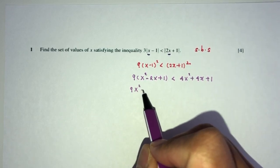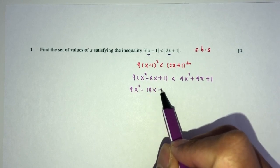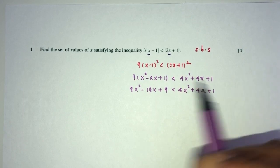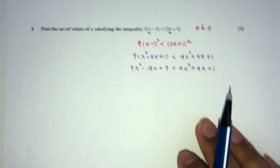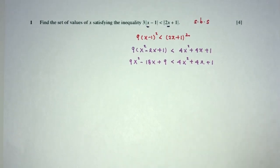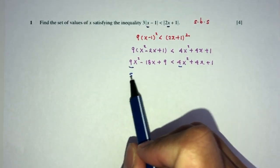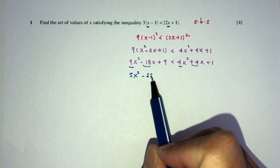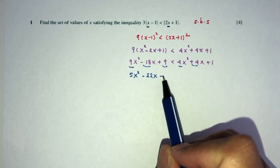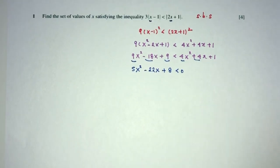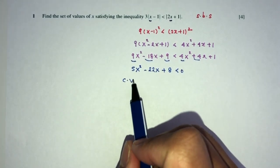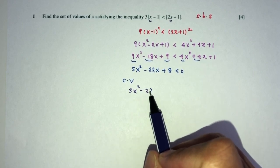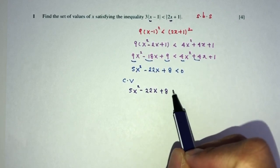Expand. You'll have 9x² - 18x + 9 less than 4x² + 4x. Now, send everything to the left-hand side because we want to simplify this equation. So you will have 9 minus 4, that should be 5. Minus 18 minus 4 should be minus 22. Plus 9 minus 1 should be plus 8 less than 0. So now we have to find the critical values of this equation, which is 5x² - 22x + 8 equal to 0.